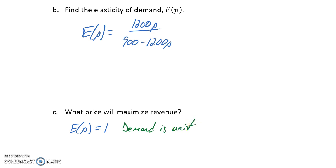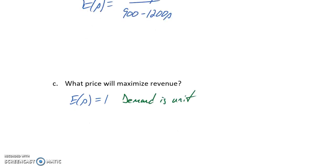If we find that point where demand is unit or equal to 1, we have our optimal price point where revenue is maximized. Turning to Wolfram Alpha to solve our elasticity function set equal to 1, we get a price point of 0.38.